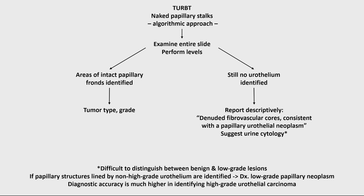Urine cytology is still lacking in its ability to distinguish between benign and low-grade lesions because of the similar cytological characteristics of those cells. However, its diagnostic accuracy is much higher for identifying high-grade urothelial carcinoma, and this has important therapeutic consequences. In a urine cytology specimen, if you are able to identify papillary structures lined by urothelial cells that don't show high-grade cytological features, you might be able to come to a diagnosis of low-grade papillary neoplasm — again, a word that tries to convey that we cannot say exactly whether it is a papilloma, PUNLMP, or actually a low-grade papillary urothelial carcinoma.